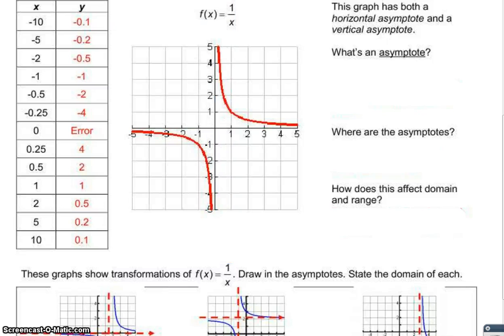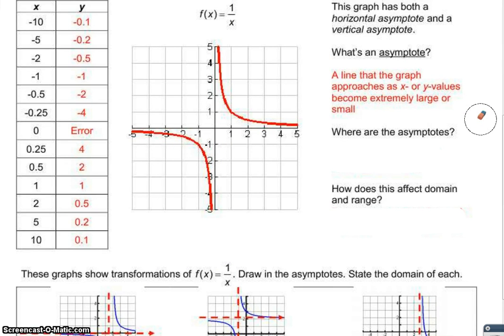This graph has both a horizontal asymptote and a vertical asymptote. What is an asymptote? An asymptote is a line that the graph approaches as x or y values become extremely large or extremely small. It's approaching a number, getting as close as it possibly can without ever being that number.